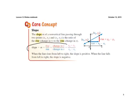That means y₂ minus y₁ — our second y-coordinate minus our first y-coordinate — over our second x-coordinate minus our first x-coordinate. When the line rises from left to right, the slope is positive. When it falls from left to right, we say it's a negative slope.